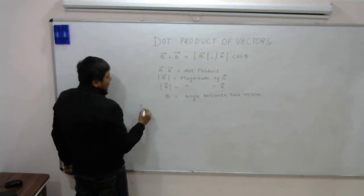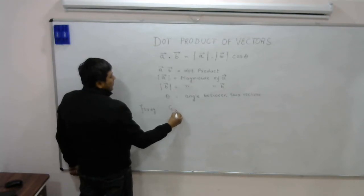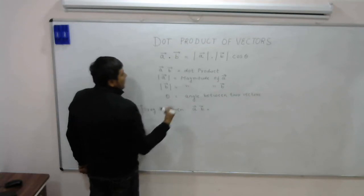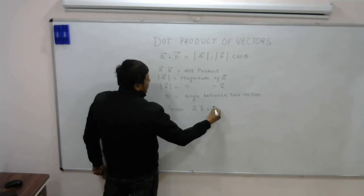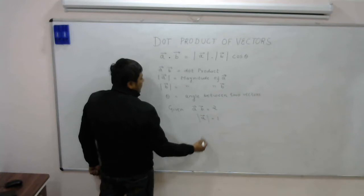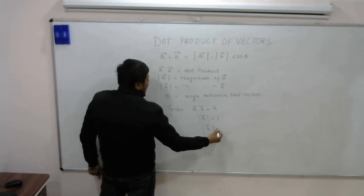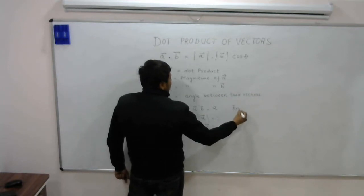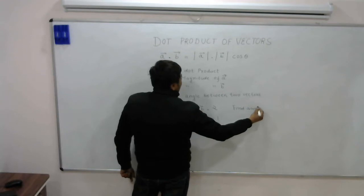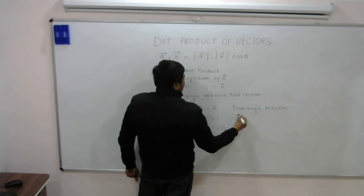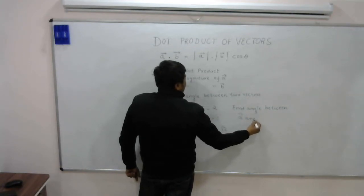For example, if I have a question that given A dot B is 2, mod A is 1, mod B is root 2, then find angle between A vector and B vector.